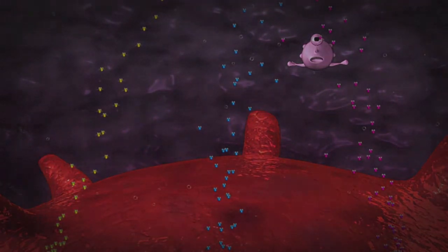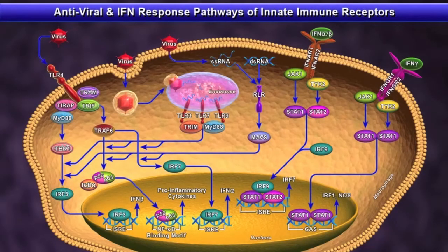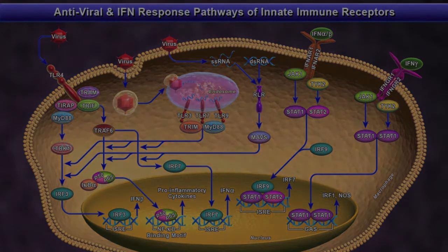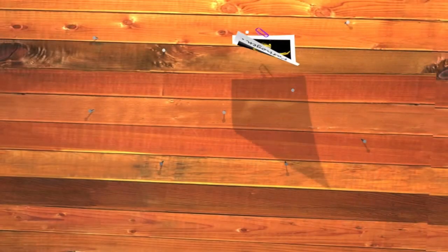To summarize, TLRs, RLRs, and NLRs are three key innate immune receptor families that are important for initiating antiviral immune responses through a series of signaling molecules and adapter molecules. This molecular cast and crew are shown in the credits that follow.